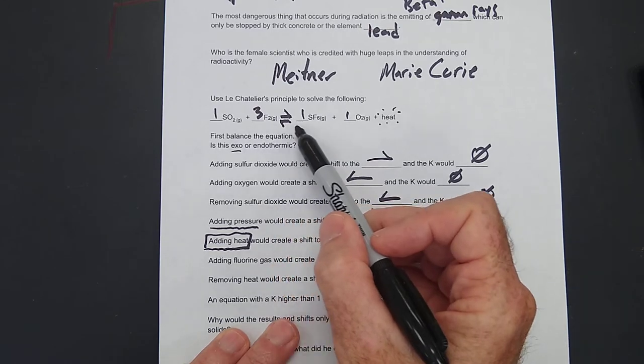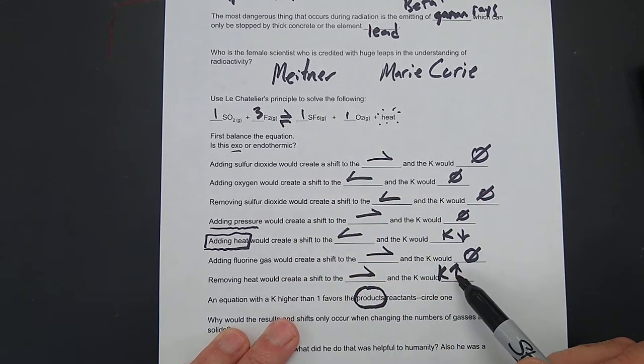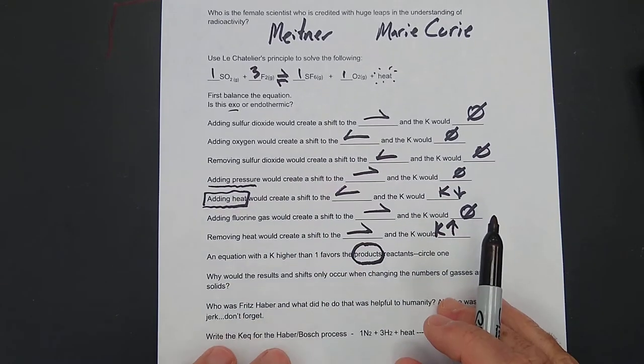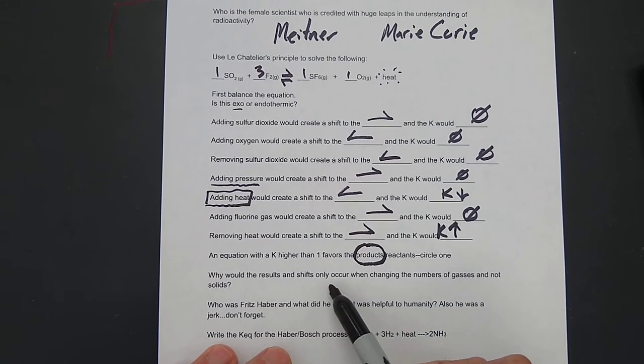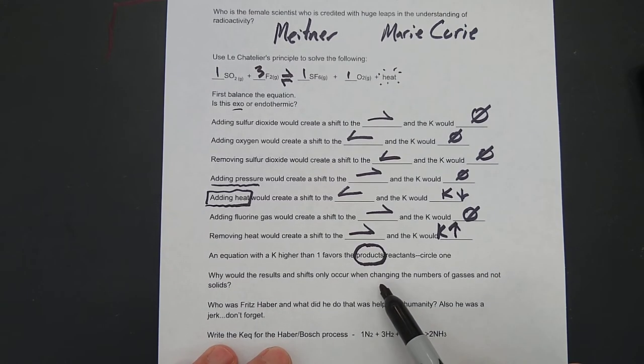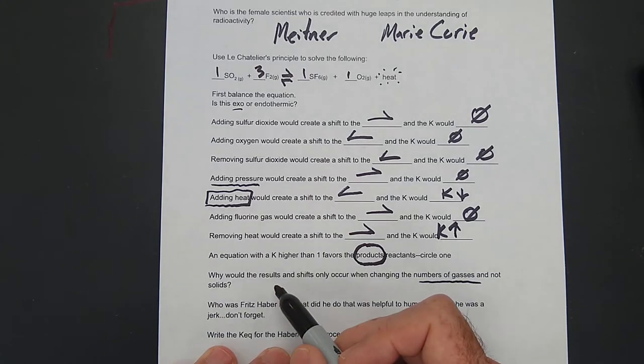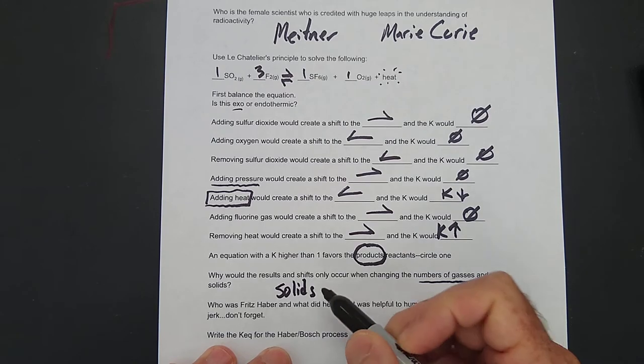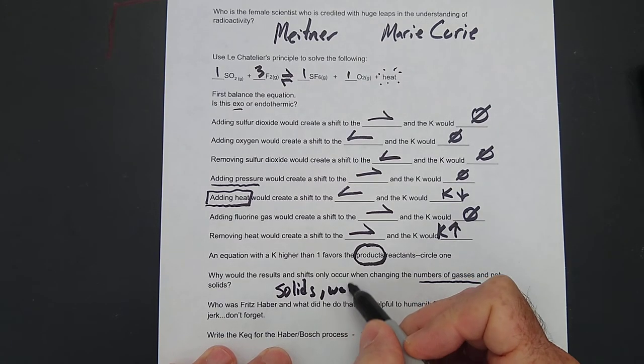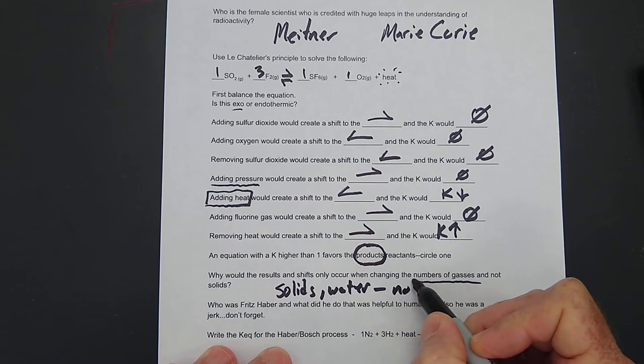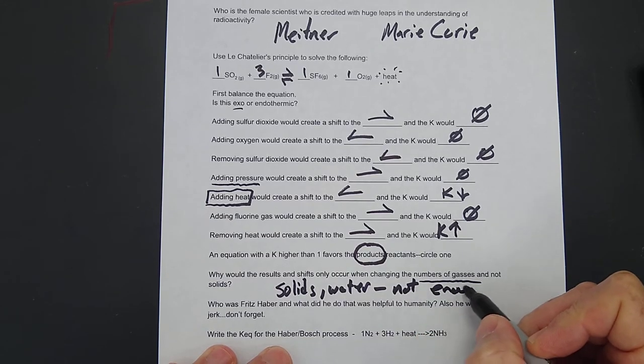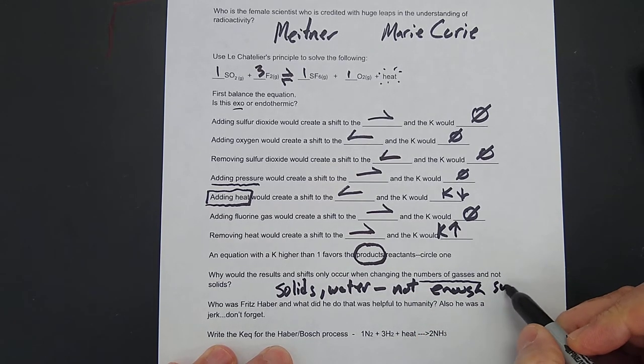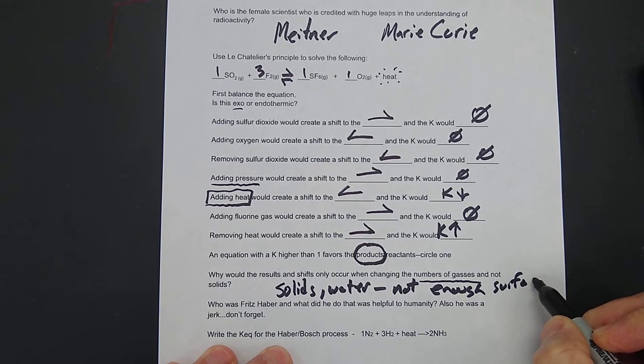An equation with a K higher than one favors the products. That's what we're saying. If we go to the right and make more products, the K goes up. Why would the results and shifts only occur when changing the numbers of gases and not solids? Solids and also water. Water doesn't change anything. They don't have enough surface area. We mentioned this several times.